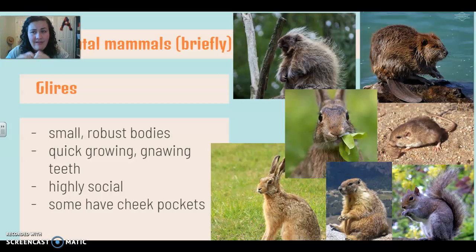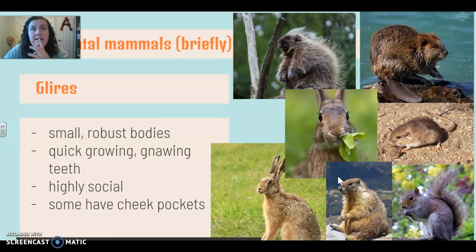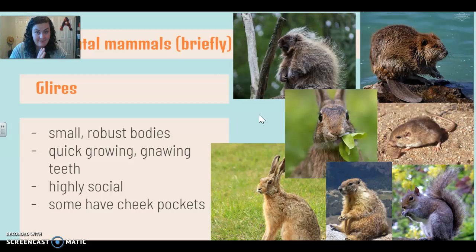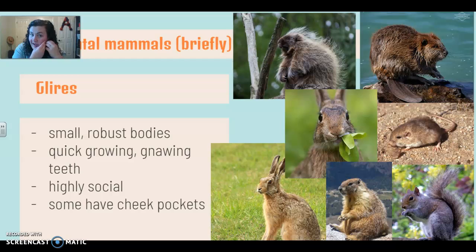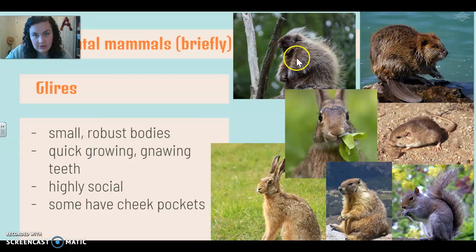Those front teeth continuously grow throughout their whole life and they gnaw on things. They're also highly social, so communication and social living is a very big part of their survival. And a lot of them will have cheek pockets. What's interesting is that like hamsters have it — some of them are actually putting food in their mouth — but a lot of them have kind of like, similar to how kangaroos have a belly pocket, a cheek pocket where they can store things that's not actually inside their mouth. Your Glears include all of your rodents: your rats, mice, squirrels, marmots, bunnies, rabbits, hares, and even beavers and porcupines. So it's a big group.